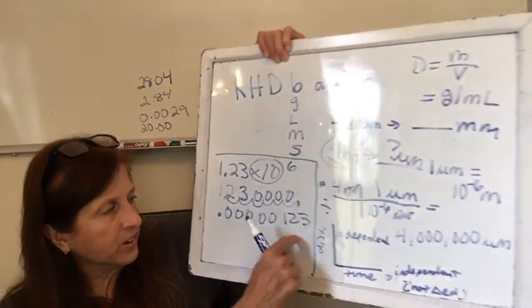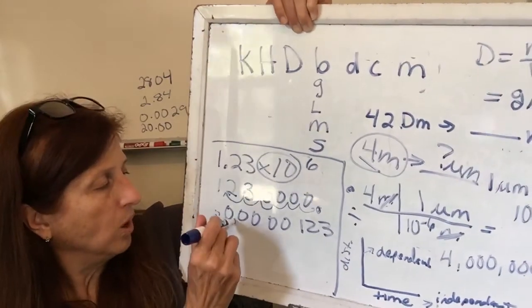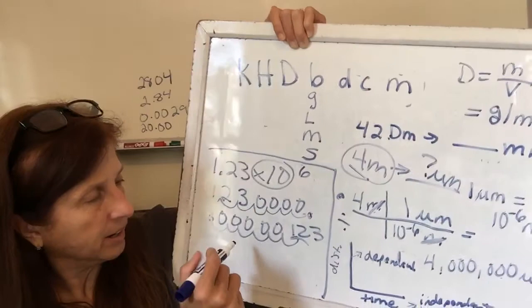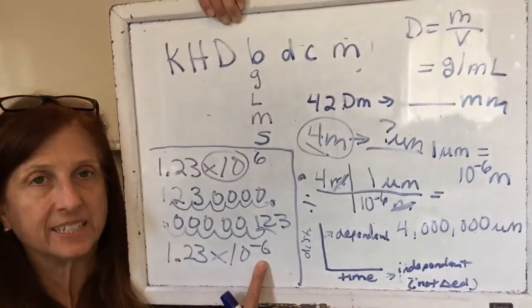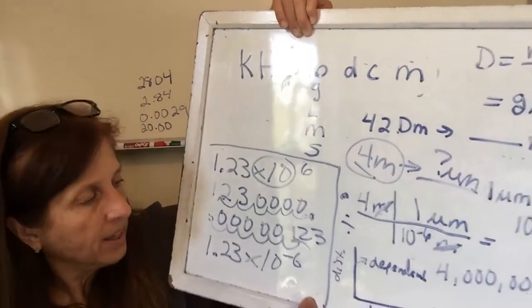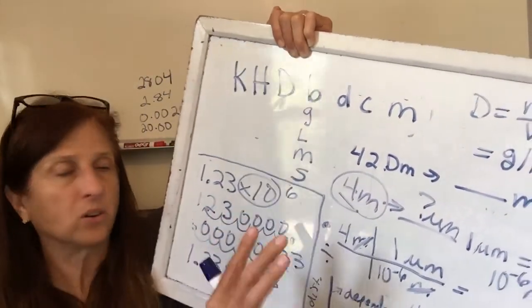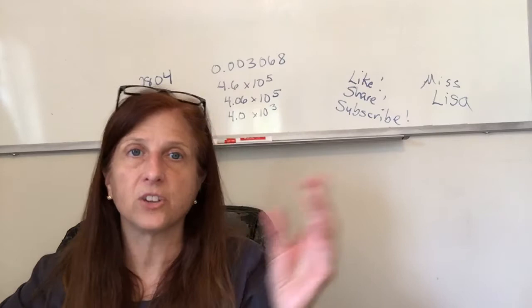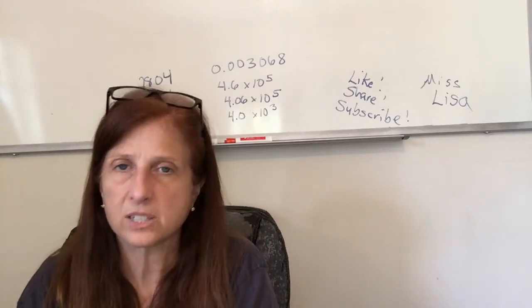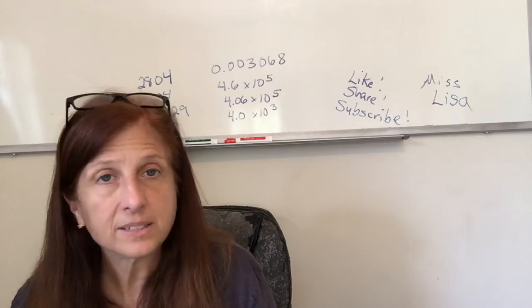For a very small number like 0.00000123, you count how many frog hops until the decimal is after the first non-zero digit — that's six hops — giving 1.23 times 10 to the negative sixth. If the exponent is negative, the number is very, very small — smaller than one. If the exponent is positive, the number is very, very big, bigger than one. It's better to remember it that way than trying to remember which direction to move the decimal, because students get it mixed up.